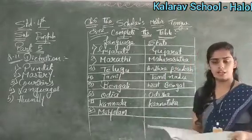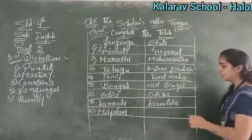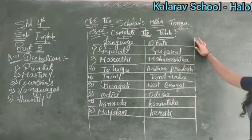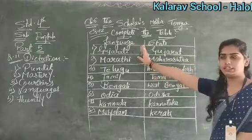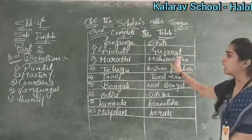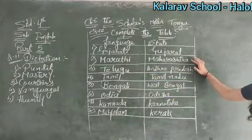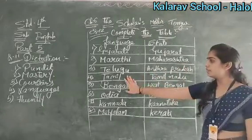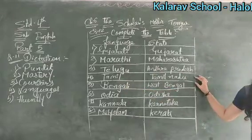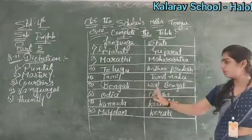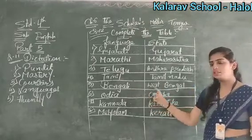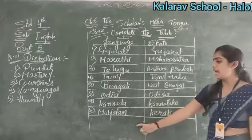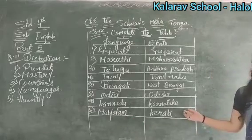The last entry is Malayalam — it is used in Kerala state. Now let's revise from the beginning: Gujarati language is used in Gujarat state; Marathi in Maharashtra; Telugu in Andhra Pradesh; Tamil in Tamil Nadu; Bengali in West Bengal; Odia in Odisha; Kannada in Karnataka; and the eighth, Malayalam, is used in Kerala state.